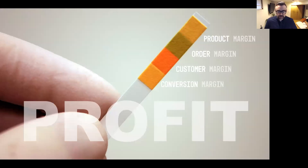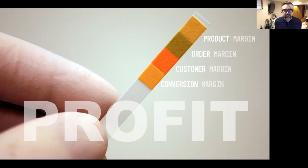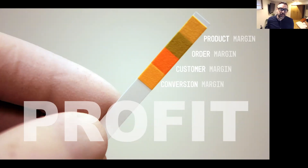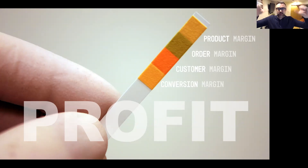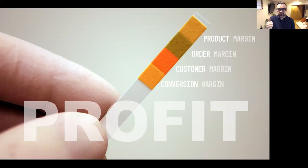So yesterday, just to recap really quick, what we talked about was what we called the profit litmus test. This is a framework I've been using to help distill and break down what we talk about when we talk about margin in your e-commerce business. At the very top line, we've got product margin — that's anything related to price, related to your products, related to cost to get sold, average order values, all those sort of things.